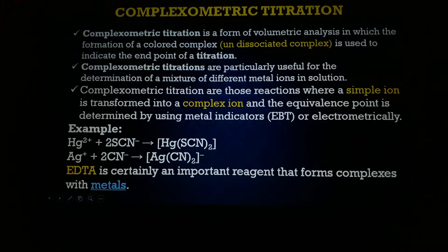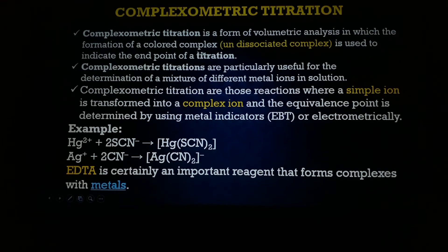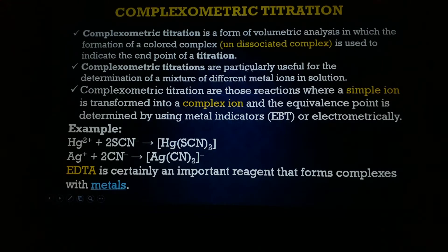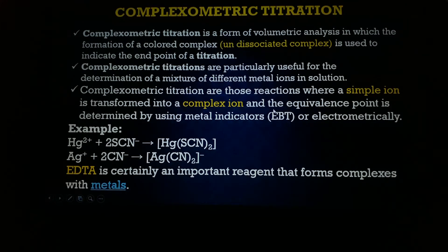Now, what is complexometric titration? Here also the title says it — formation of a stable complex is the end of the titration. Complexometric titration is a form of volumetric analysis in which the formation of a colored, undissociated complex — one that will not further dissociate — is used to indicate the end point. These titrations are particularly useful for the determination of a mix of different metal ions in solution.